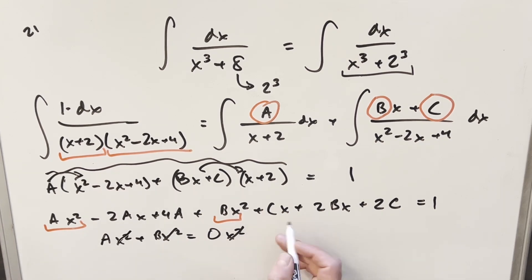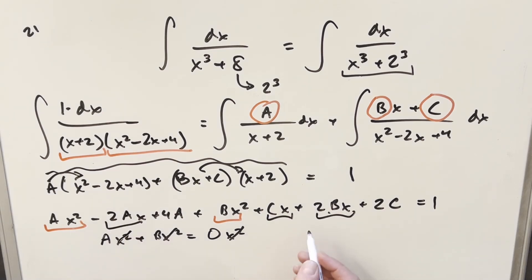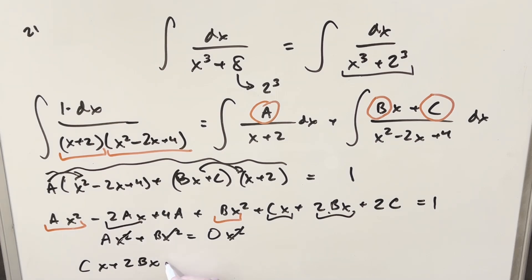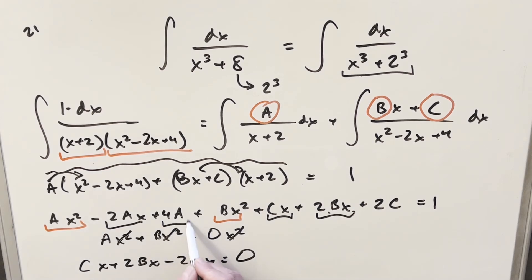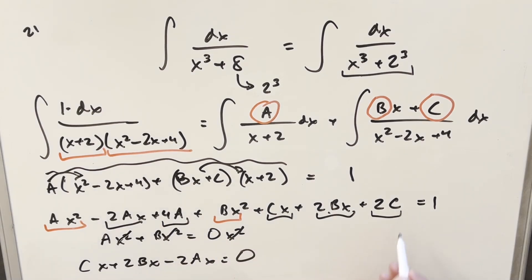Grouping the x terms: cx plus 2bx minus 2ax equals 0, so c plus 2b minus 2a equals 0. Grouping the constant terms: 4a plus 2c equals 1.